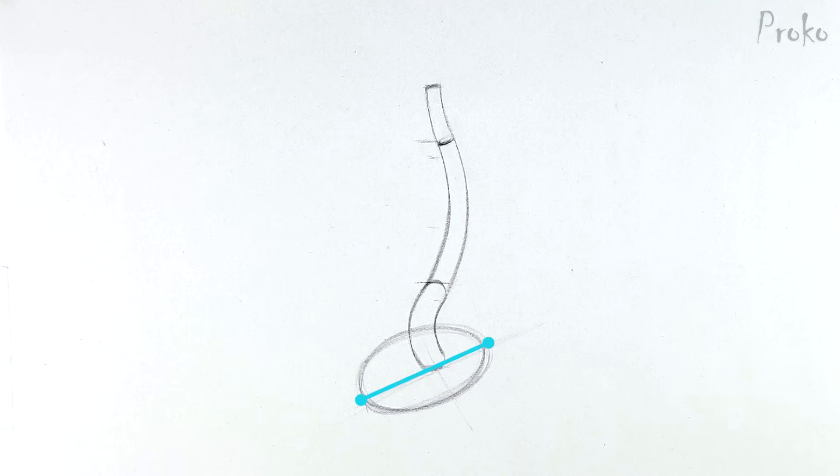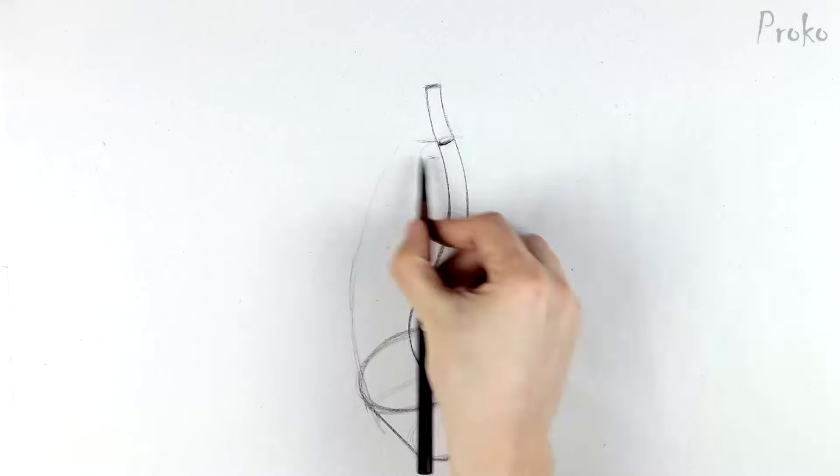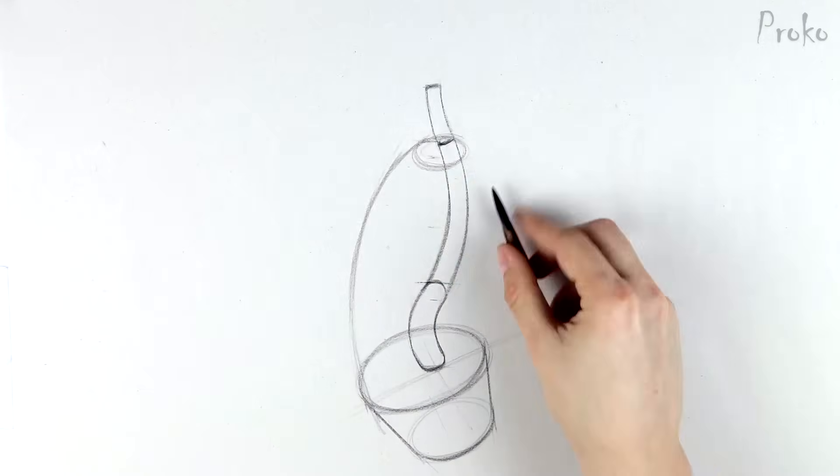The width of the pelvis cylinder is about the same as the length of the thoracic section of the spine. Two units. Find the sides, and then another ellipse for the bottom plane.